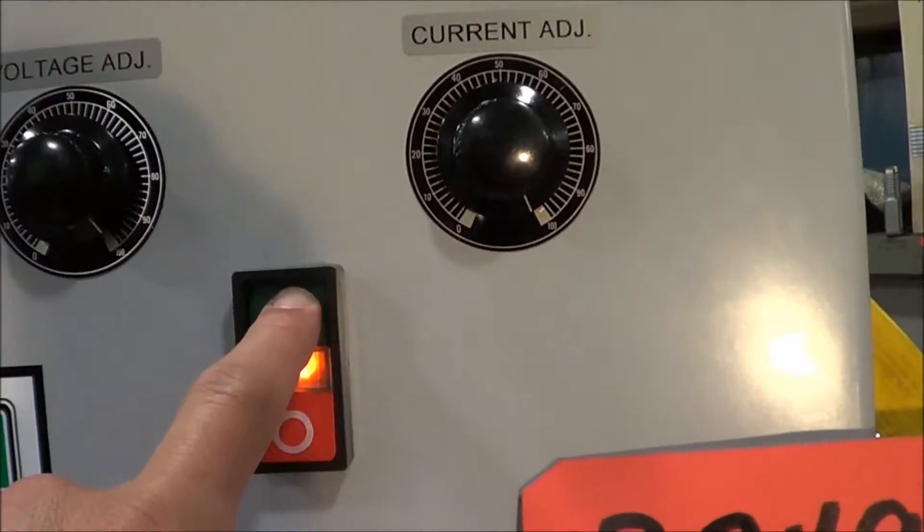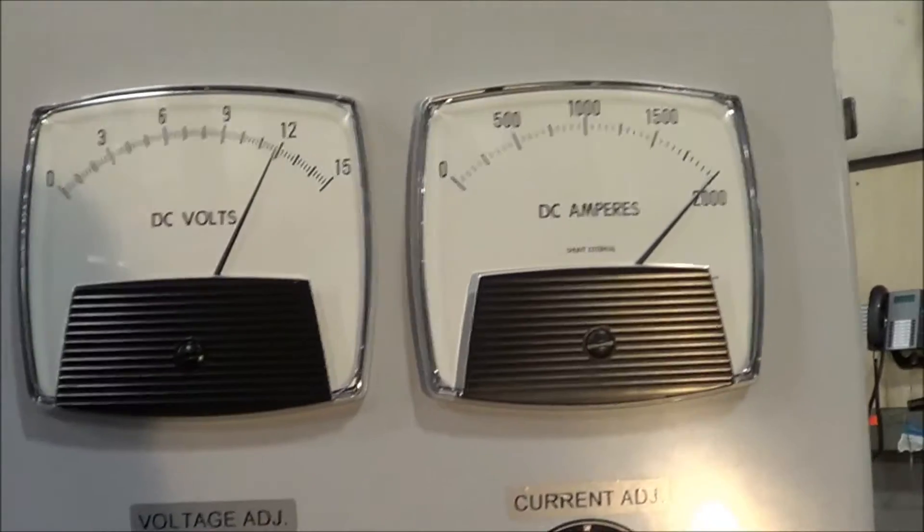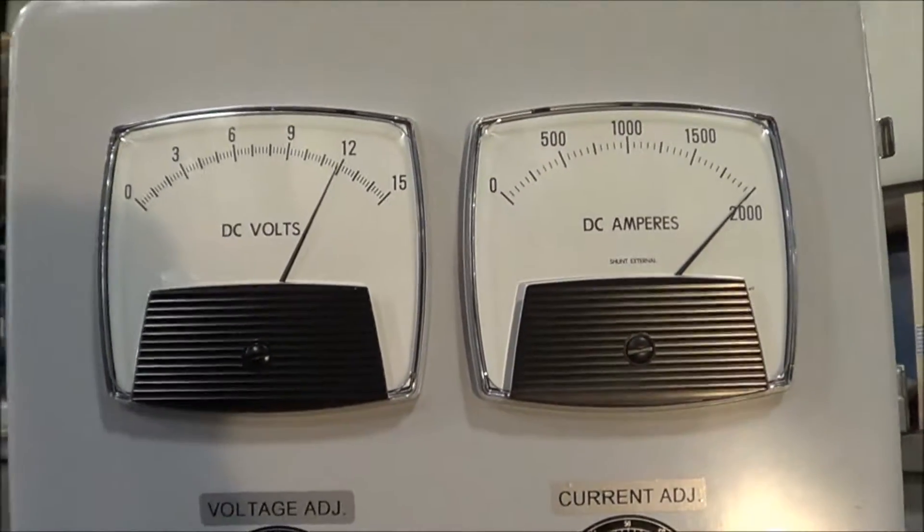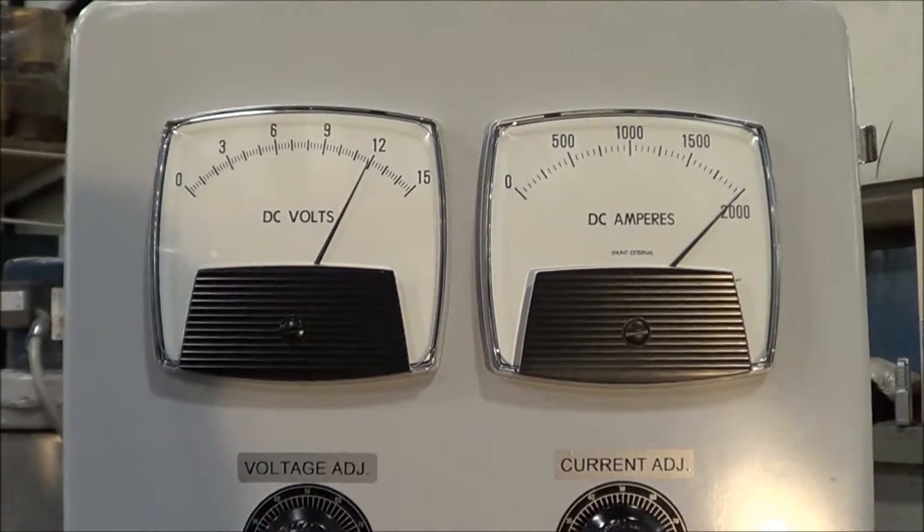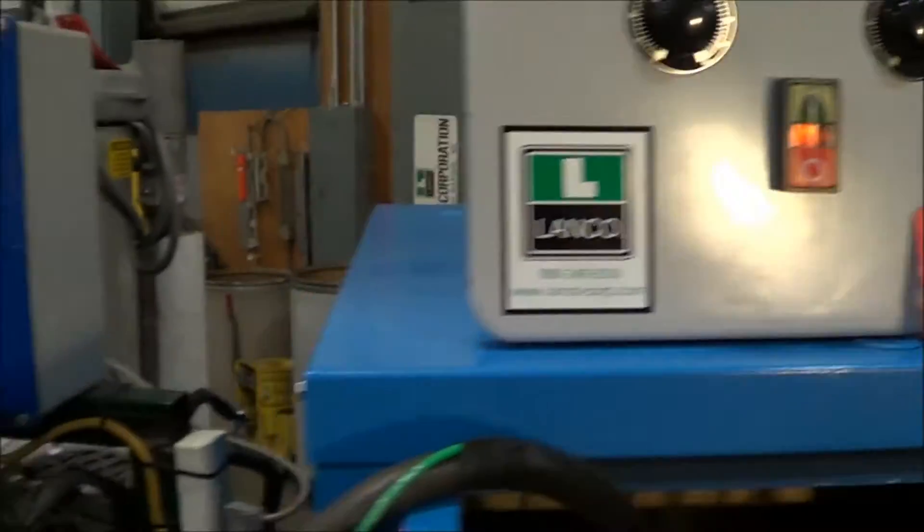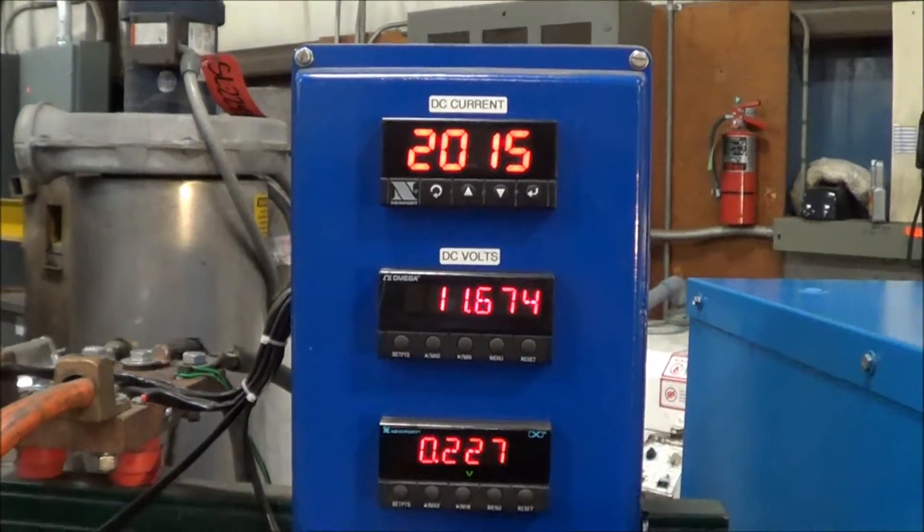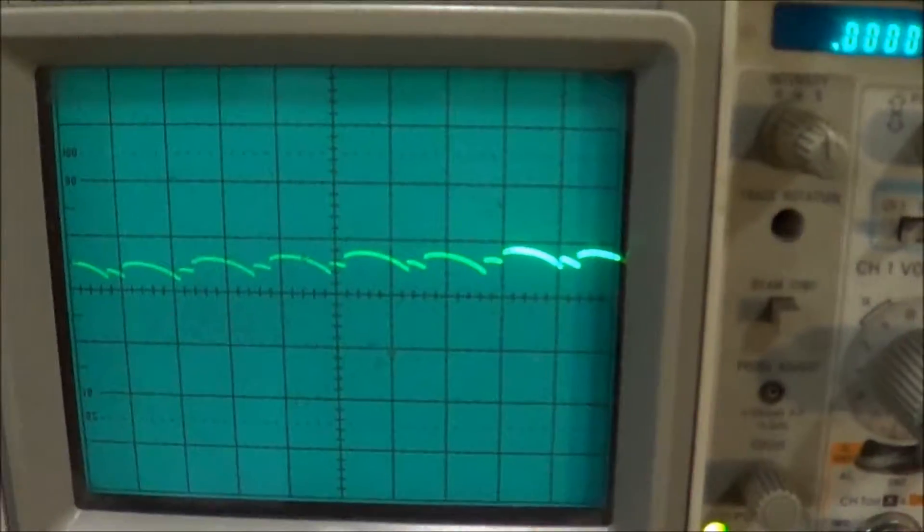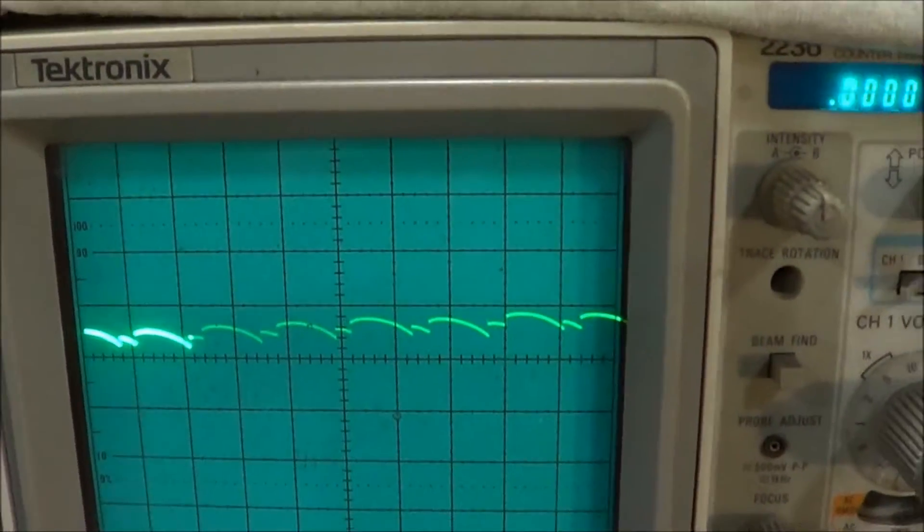And we will now operate it for you. You can see we've got 2000 amps, 12 volts. On the load bank here we've got the same, and a good wave pattern on the scope.